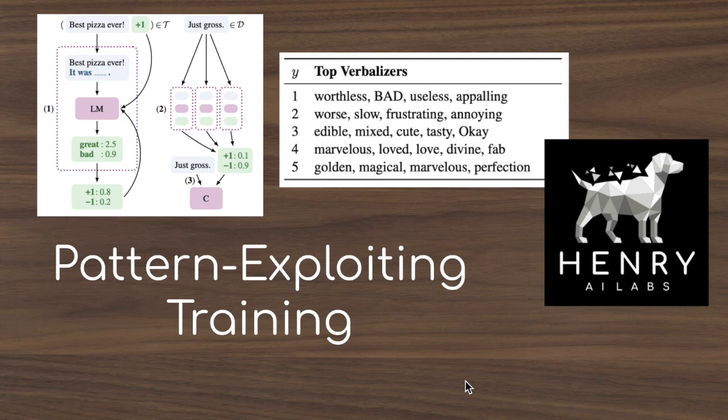Thanks for watching this video on pattern exploiting training. From this video, you should understand what a pattern-verbalizer pair is and see extensions like the auxiliary language modeling loss, the iterative PET algorithm, and the early prototype of automatic verbalizer search — which automatically finds the mapping from the masked language model's predictions into labels for the downstream task. Please subscribe to Henry AI Labs for more deep learning and AI videos.